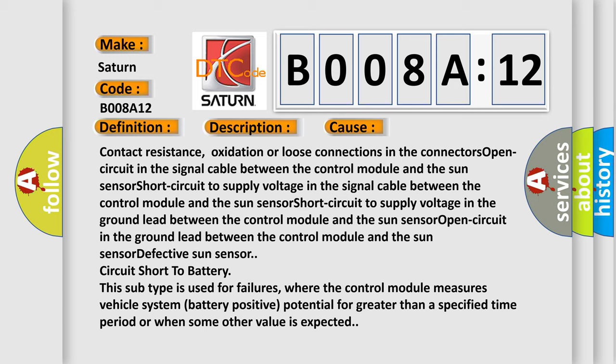This subtype is used for failures where the control module measures vehicle system battery positive potential for greater than a specified time period or when some other value is expected.